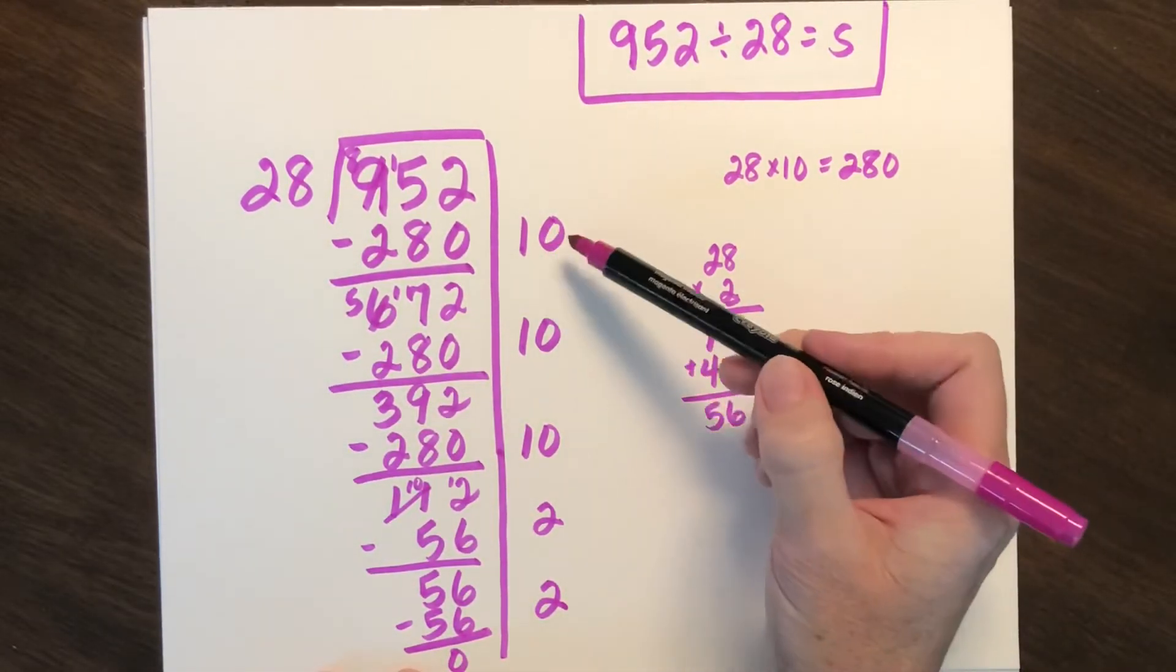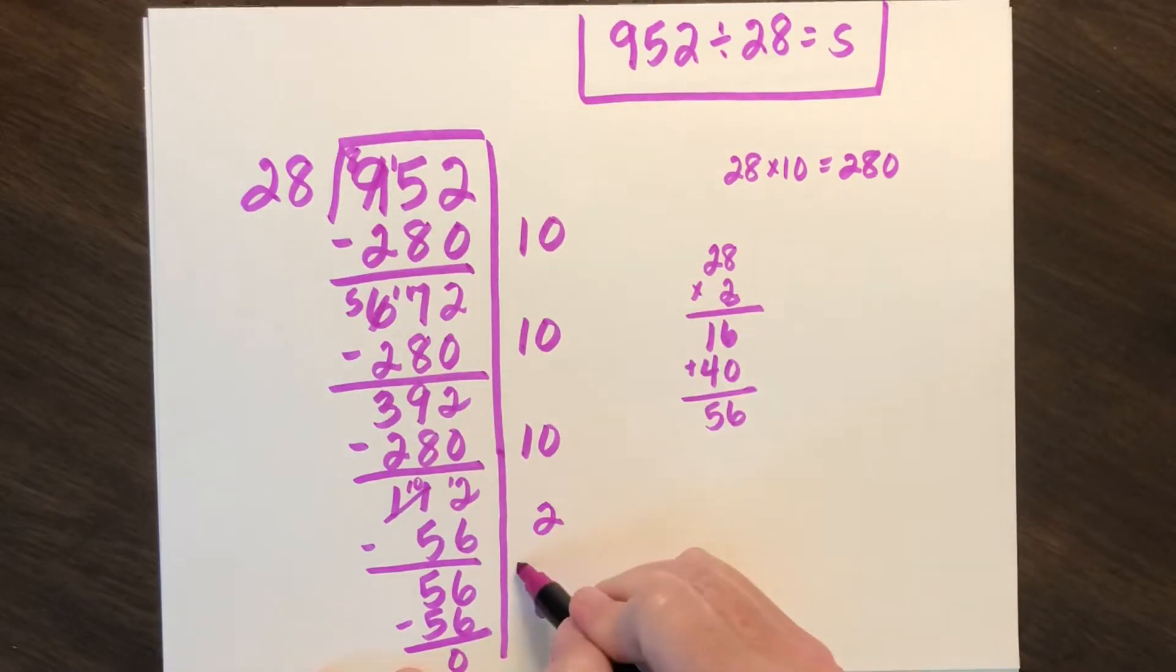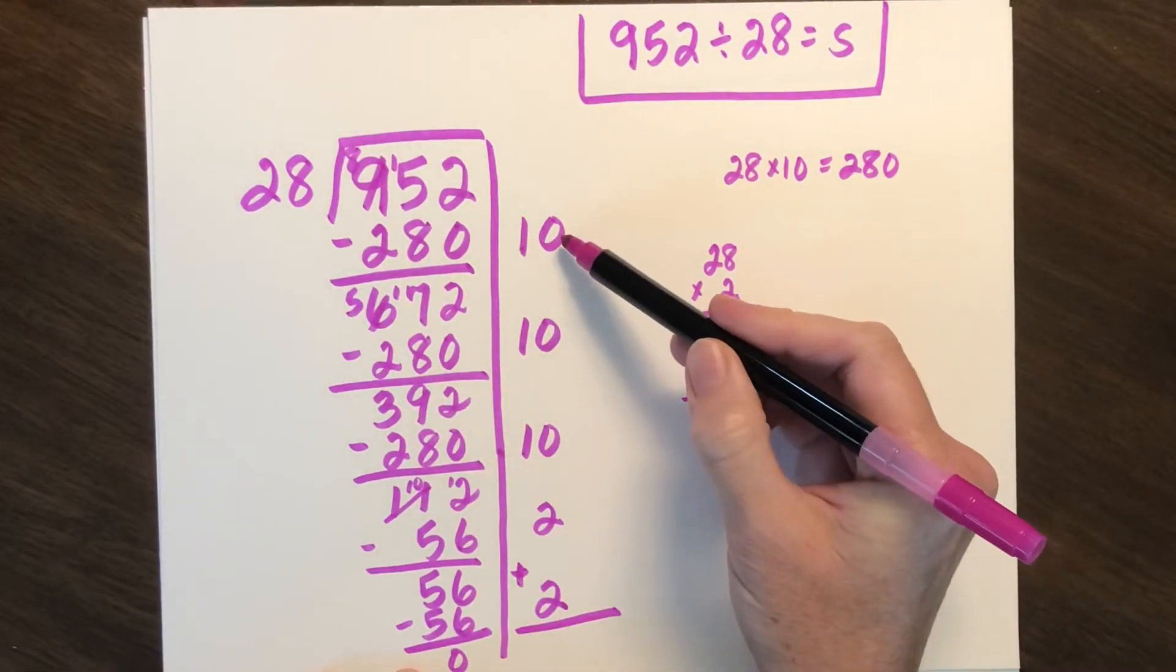Now I've divided 952 evenly into groups of 28. So how many are in each group? I now find the sum of my partial quotients.